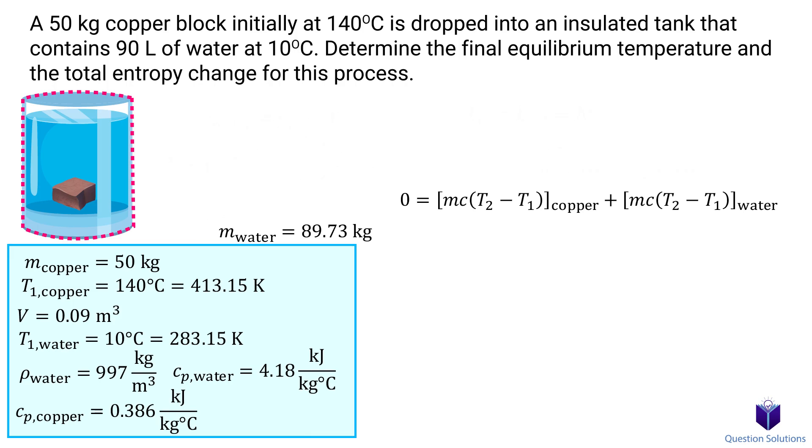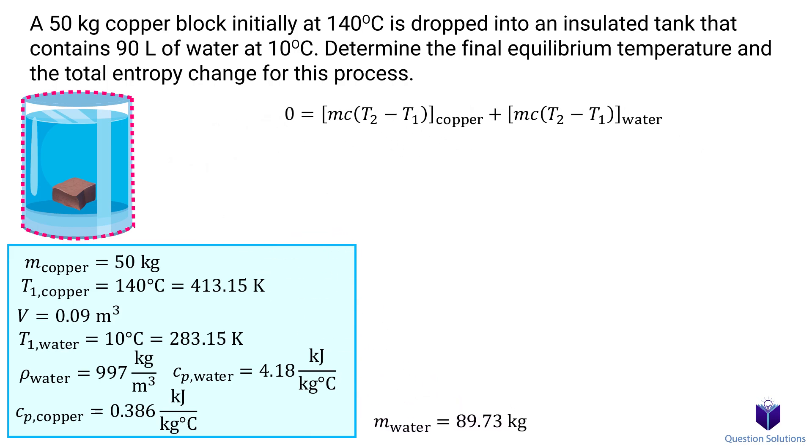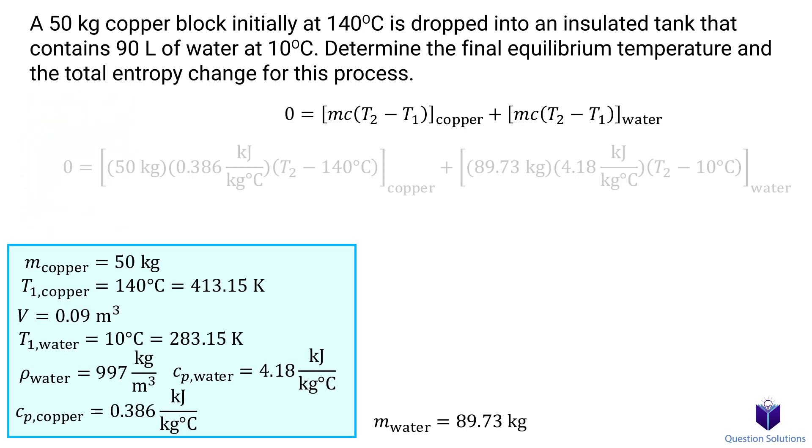Let's plug our values in and solve. Now that we have the mass of the water, we can go back to our original equation and solve for T2. So this tells us that both the water and the copper block reach a temperature of 16 degrees Celsius after equilibrium.